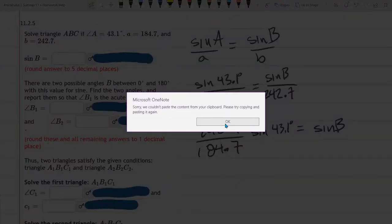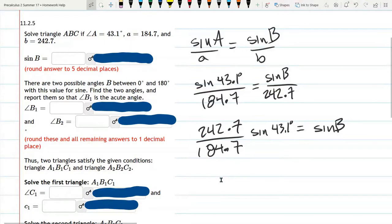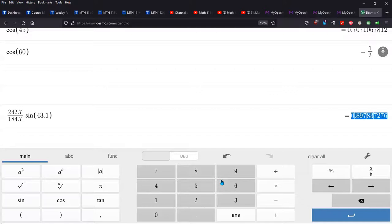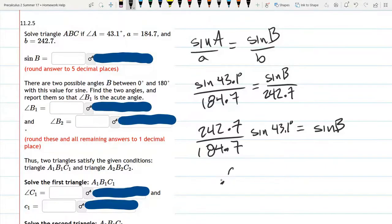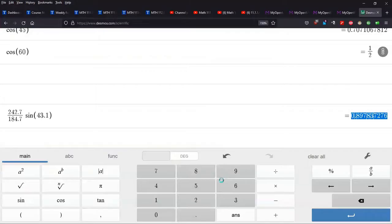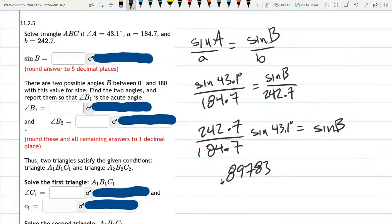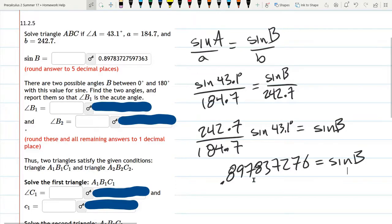So I'm just going to copy-paste this right here. I guess I'll write the value down. 0.89783, something, something, something, 7276. Please be more careful if you're actually submitting these. I can check right here really quickly. All right, so that's sine B.